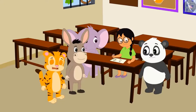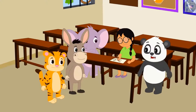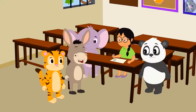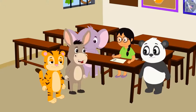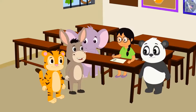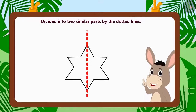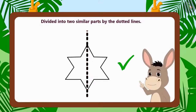Shere Khan starts laughing, and other children feel surprised that her magic has failed. Then Bola explains, 'There is no magic. There are some alphabets and objects that are made of two similar parts. Therefore, they can be divided into two similar parts by using a dotted line.'